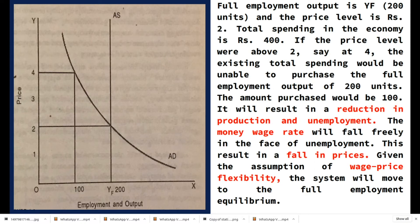So the total spending in the economy is rupees 400, which means price times quantity: 2 into 200 equals 400. If the price level was above rupees 2, say at 4, the existing total spending would be unable to purchase the full employment output of 200 units. The amount purchased would be only 100 units, resulting in a reduction in production and employment. The money wage rate will fall freely in the face of unemployment, resulting in a fall in prices also. Given the assumption of wage-price flexibility, the system will move to the full employment equilibrium.